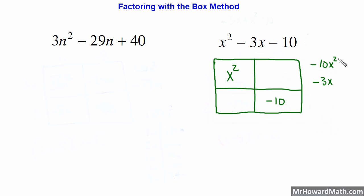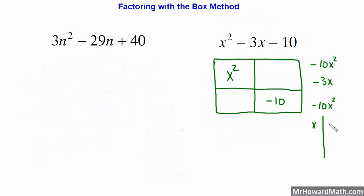These two parts — the product and the sum — are important. We want two factors that multiply together to give us negative 10X squared, but when added together give us negative 3X. So we write our 10X squared here and find factors of that. We could have X and 10X — if we add those, that's 11X; if we subtract them, it's 9X. That satisfies the product but not the sum. So we keep working. Next would be 2X and 5X — multiplied together we get 10X squared, added we get 7X, subtracted we get 3X.